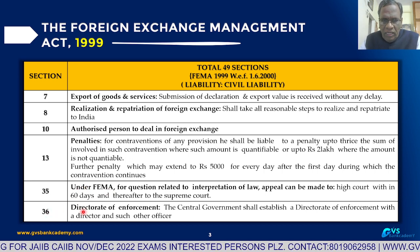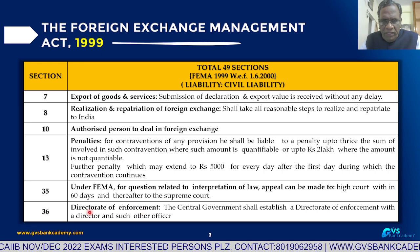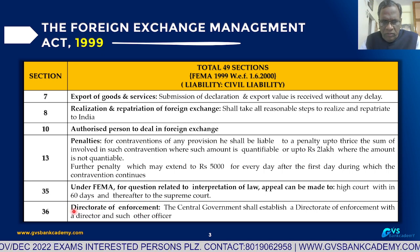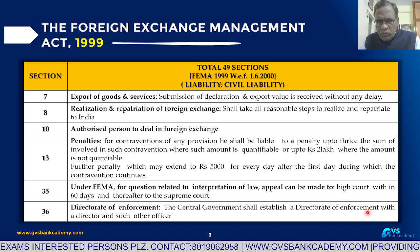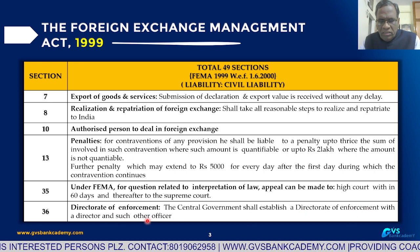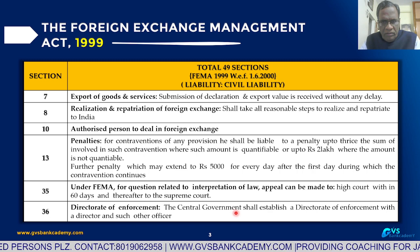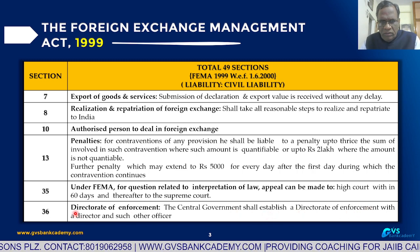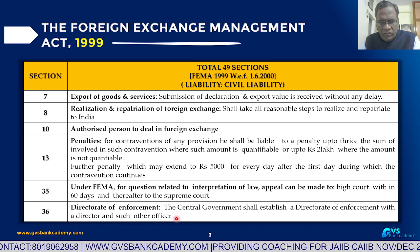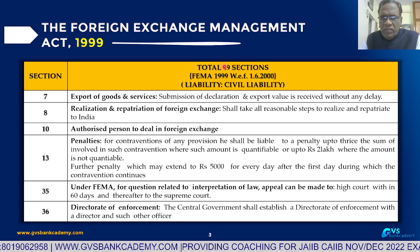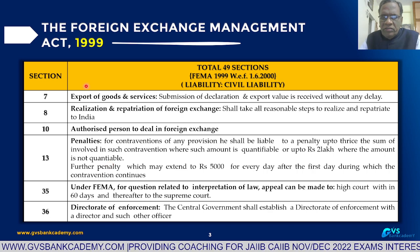Section 36 deals with the Appointment of the Director of Enforcement. FEMA's entire activities are dealt with by the Directorate of Enforcement. The Central Government shall establish a Directorate of Enforcement with a Director appointed by the Central Government and with such other officers for execution of the Act.